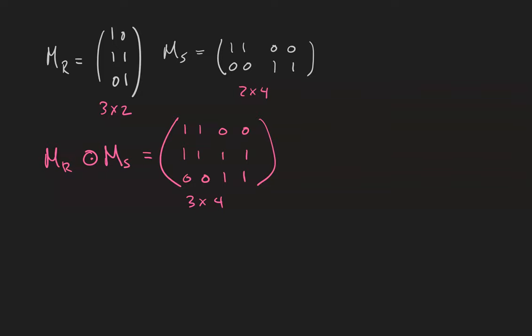If we look back at the relation RS, we realize that this is exactly the matrix for that relation. So we have the convenient fact, which was the whole point of Boolean multiplication in the first place, that when we multiply matrices for relations, we get the matrix for the composition of those relations.